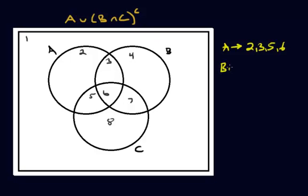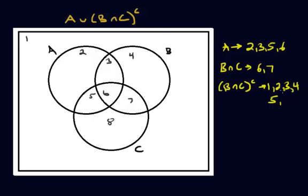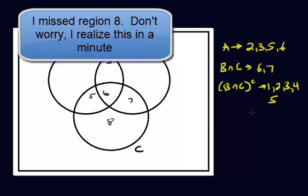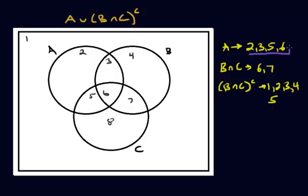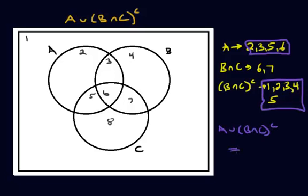What's B intersect C? That's regions six and seven. So B intersect C complement would be all the other regions: one, two, three, four, five — just not six and seven. Now I want to union these together, so it's going to be these regions plus these regions. A union B intersect C complement equals regions one, two, three, four, five, and six.